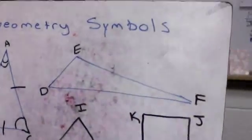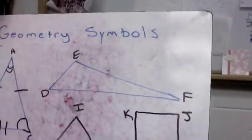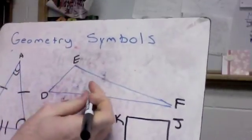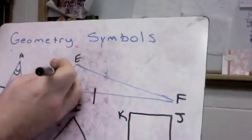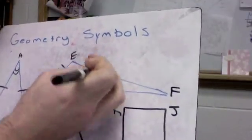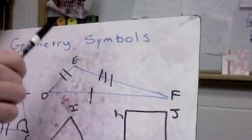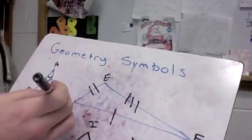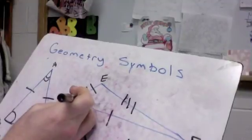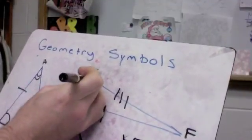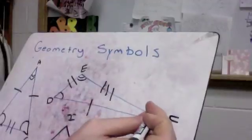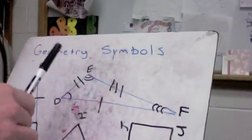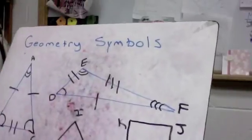Now I'm going to do the same thing but show you this on a scalene triangle, where all the sides are different and all the angles are different. They might put one line through here, two lines through here, and three lines through here to show that each length is different. They might also show angle D having one arc, angle E having two arcs, and angle F having three arcs, showing that those are all different angles.